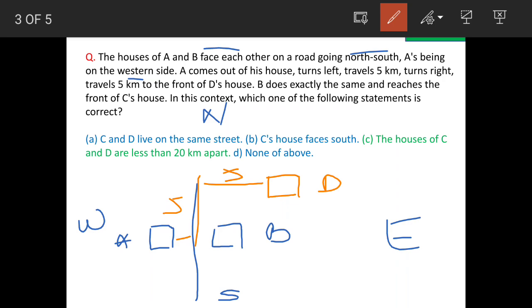B does the same thing. When B is turning left, he is going in the opposite direction, and when he is turning right, he is also again going in the opposite direction. Now he is standing in front of the house of C.